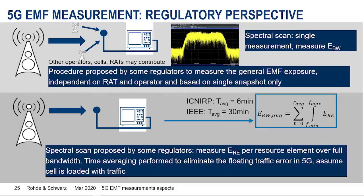Here are possible requirements from regulators worldwide. Some regulators say: take it simple — in 5G we only want to verify the general exposure. That means do a spectral scan over a certain bandwidth and measure the EMF exposure within this bandwidth. Every signal that contributes — serving cell, neighbor cells, another operator — everything visible within this band contributes to the EMF, as long as we don't trespass the limit.